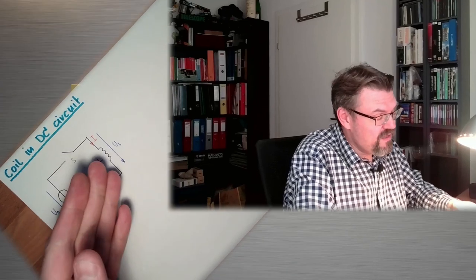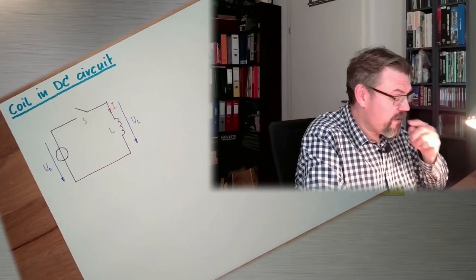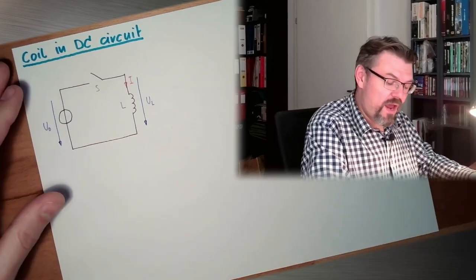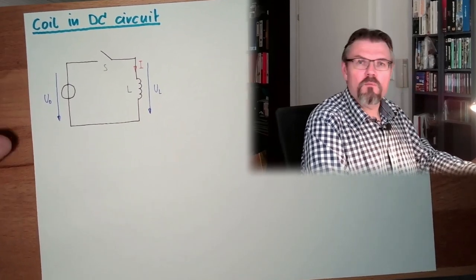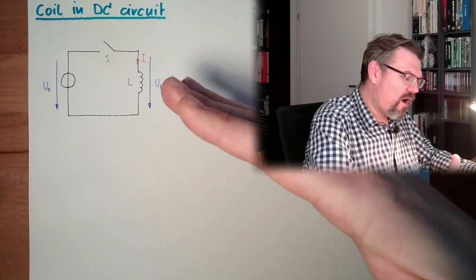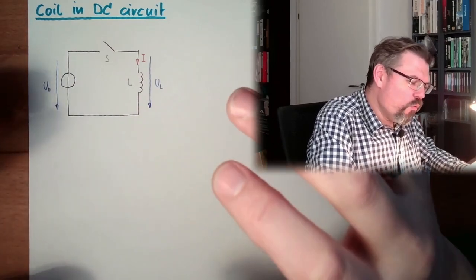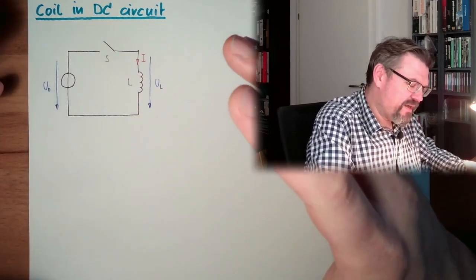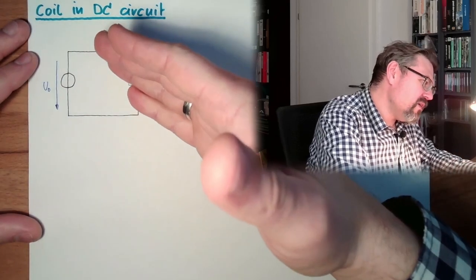And today we want to discover how a coil inductance is behaving in a DC circuit. I've drawn here a DC circuit, so we have an ideal voltage source here, a DC voltage source. I have an ideal coil and I have a switch. And I imagine that at some point in time I close the switch. And now we want to see what is happening in this point in time when I close the switch.